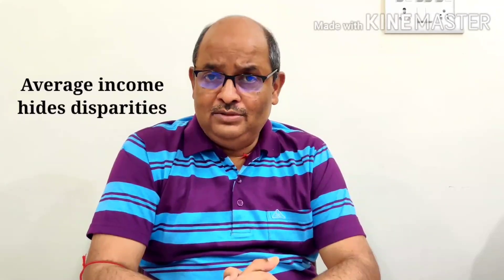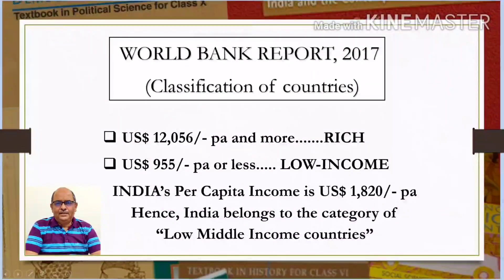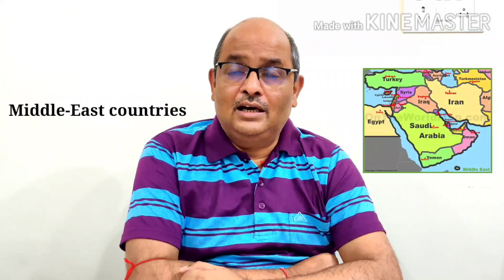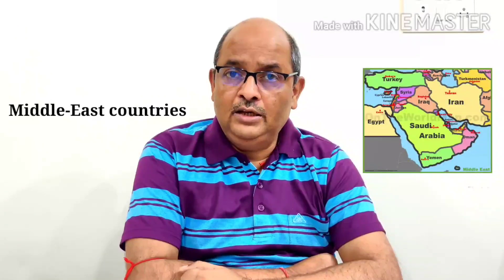In World Bank reports, this criterion is used in classifying countries. Countries with per capita income of $12,056 per annum and above in 2017 are called rich countries, and those with per capita income of $955 or less are called low income countries. The rich countries, excluding countries of the Middle East and certain other small countries, are generally called developed countries. Can you tell me why countries of the Middle East are not called developed in spite of having a high per capita income?